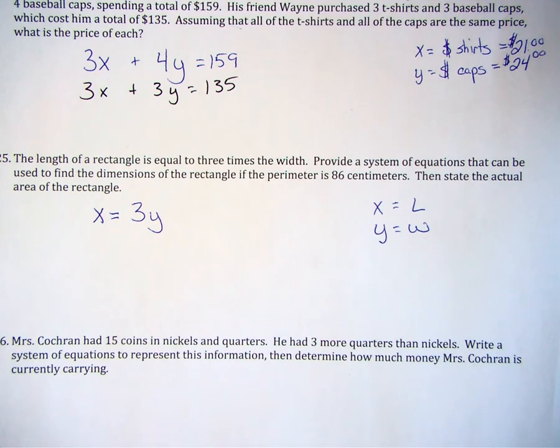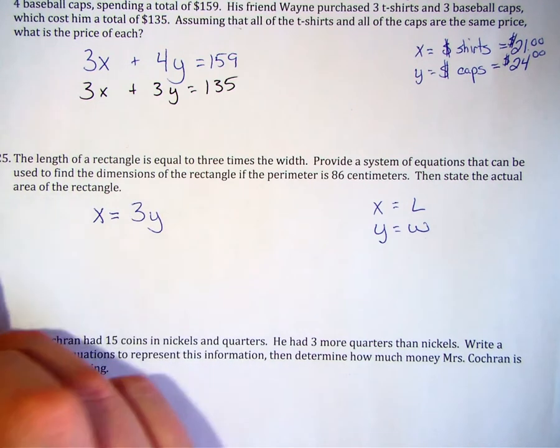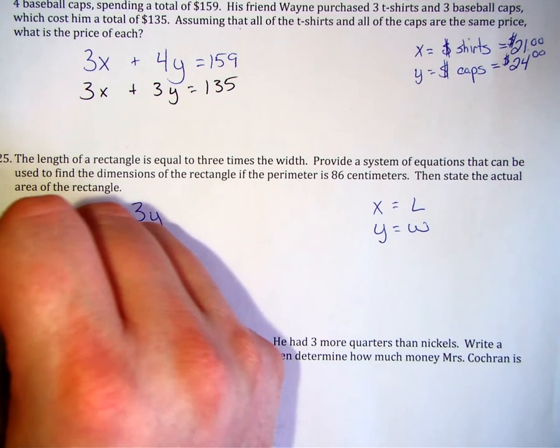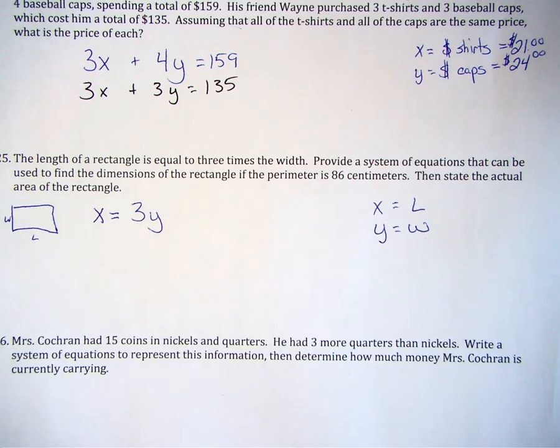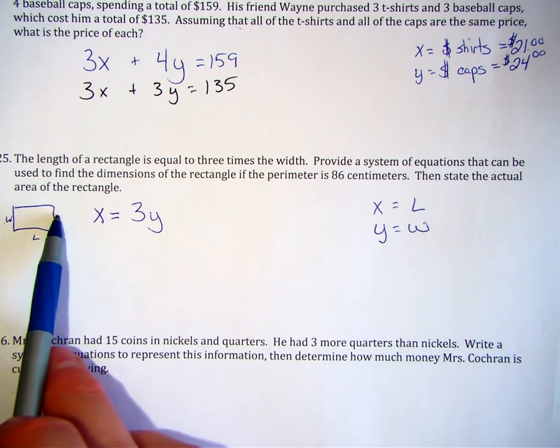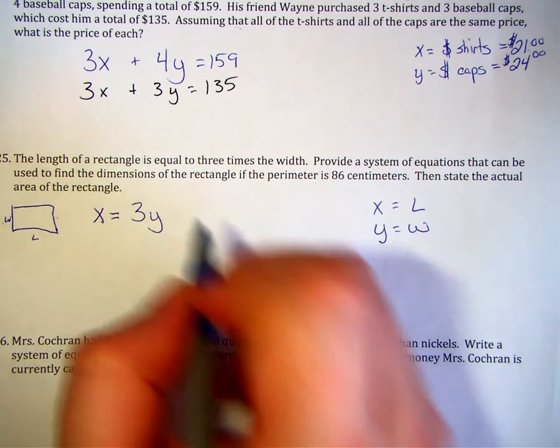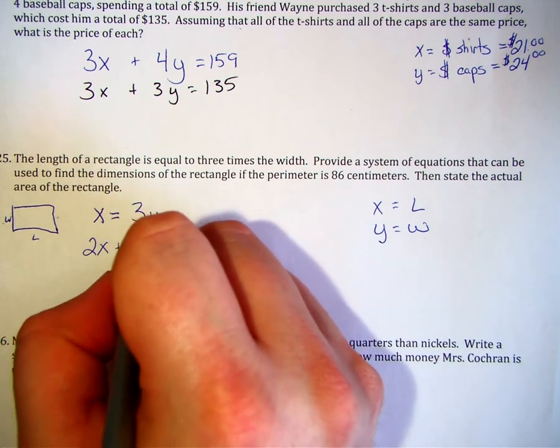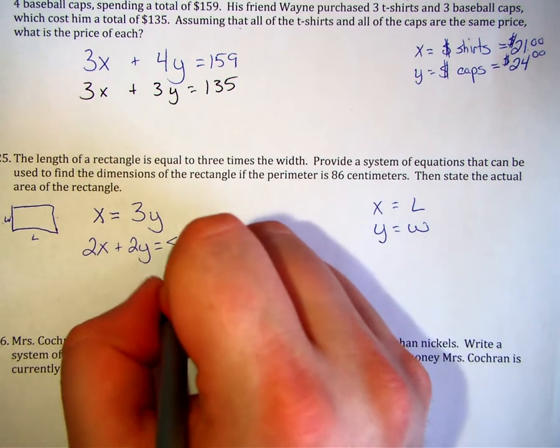We need to find the dimensions of the rectangle if the perimeter is 86 centimeters. Now, remember about perimeter. If I draw the shape, I have length and width. But I have two widths that have the same value. I have two lengths that have the same value. So, 2x plus 2y is equal to the total perimeter of 86.